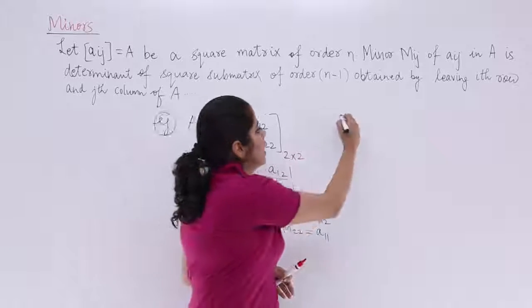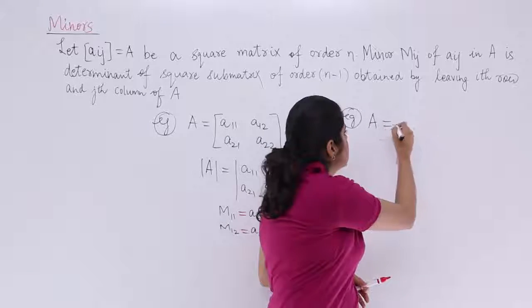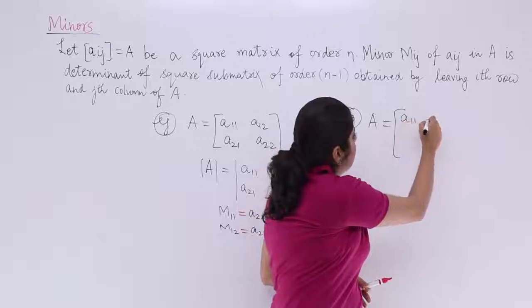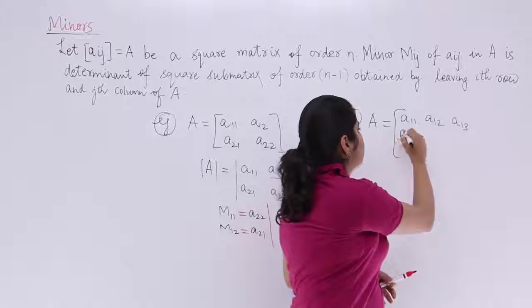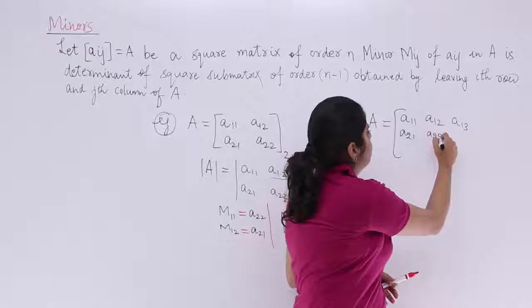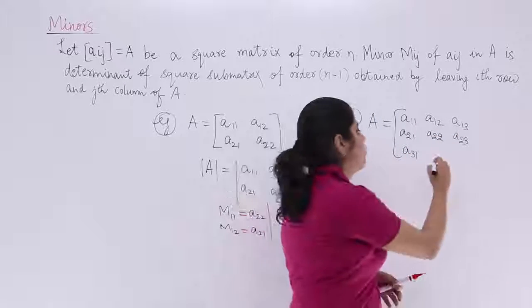Now we are going to take a matrix A again. Maybe the name is same. We take it as it is. And it is a 3x3 matrix. A11, A12, A13, A21, A22, A23, A31, A32, A33.